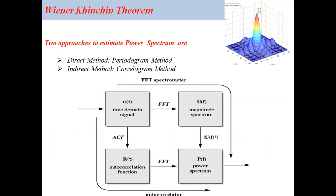If you have a signal in the time domain which satisfies the required conditions according to Fourier transform, then you can take the Fast Fourier Transform of the time domain signal, where you will get the magnitude spectrum. If you take the square of the magnitude spectrum, you will get the power spectrum, because the square of the amplitude gives the power. This is the direct method, where you take the signal, apply Fourier transform, calculate the magnitude function, and take the square, which gives the power spectrum.